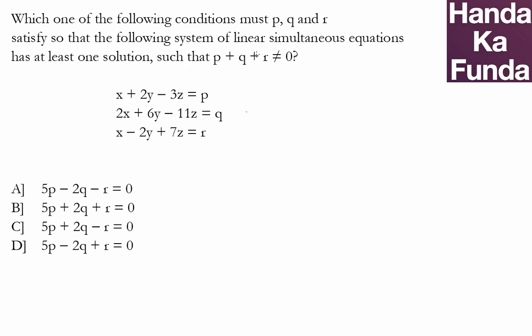Hello, in this particular question we are asked which of the following conditions must p, q and r satisfy so that the following system of linear simultaneous equations has at least one solution such that p + q + r ≠ 0.